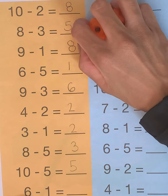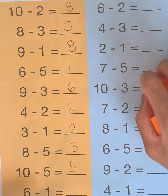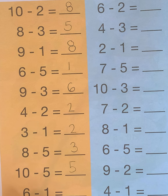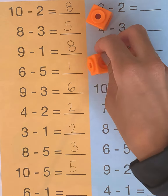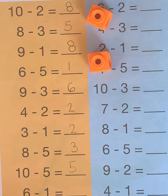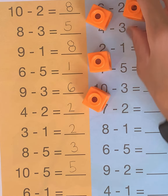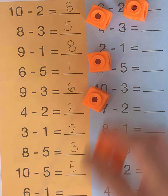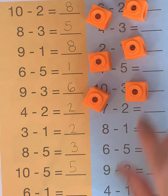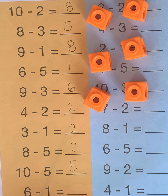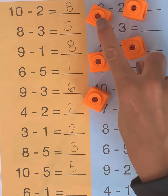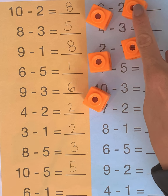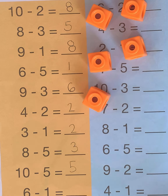Next problem: 6 minus 1. So we want to start off with how many cubes? 6. 1, 2, 3, 4, 5, 6. And we are taking how many away? Just 1. How many are left? 1, 2, 3, 4, 5 cubes.